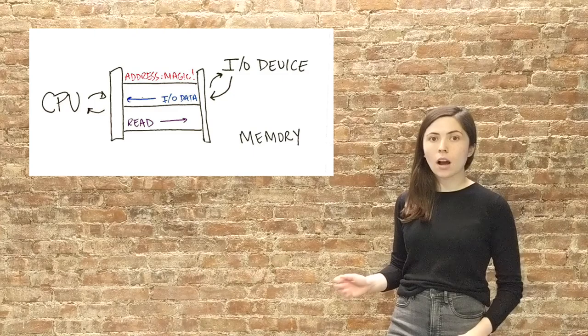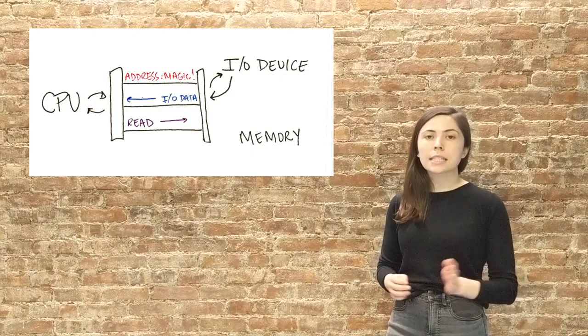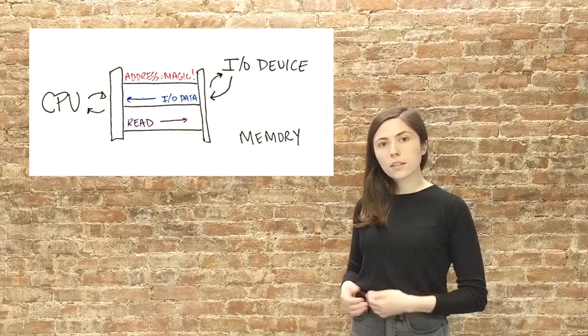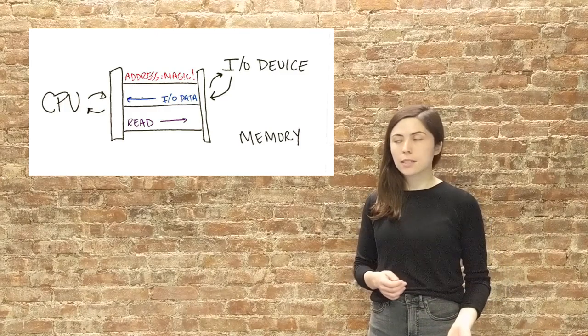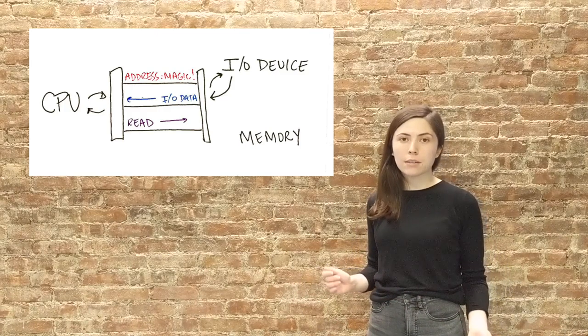When it sees the magic address on the address wires, it puts its data on the shared data wires. The CPU is then able to retrieve the data from the input-output device, just like it would receive any data from memory.